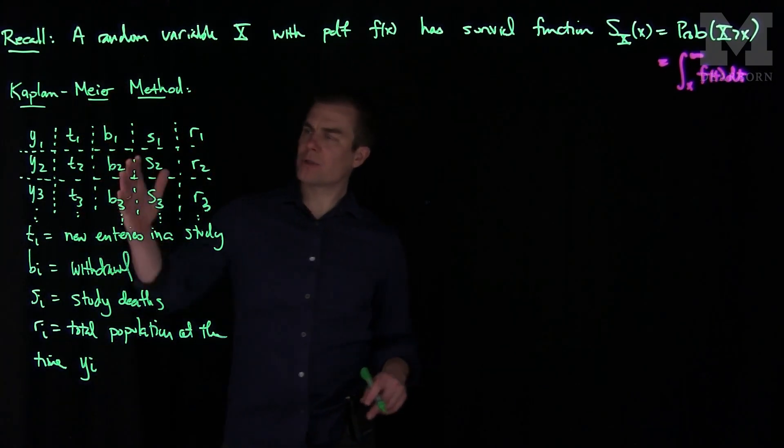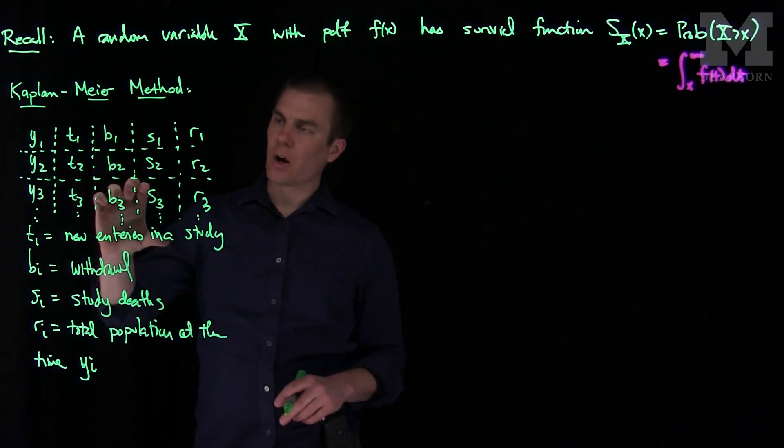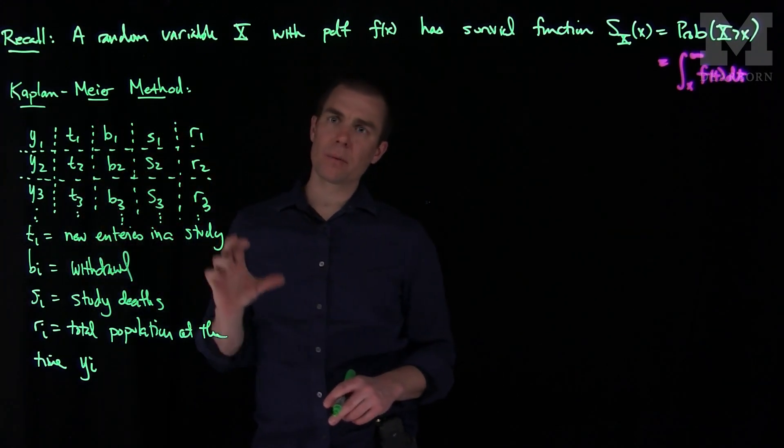So what we have now is we have a whole bunch of times, entrants into a study at the time, withdrawals, deaths, and the total number of population in the study.